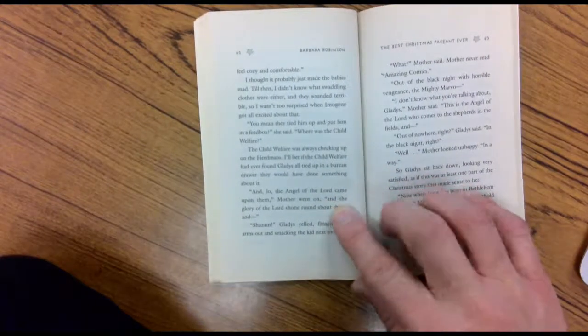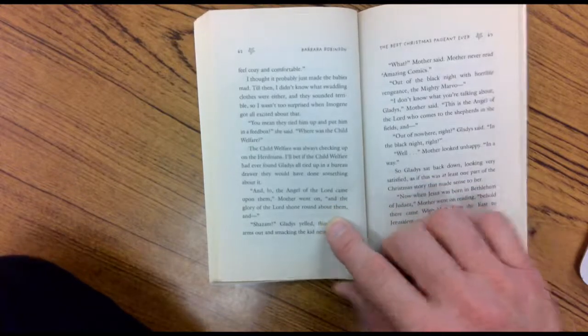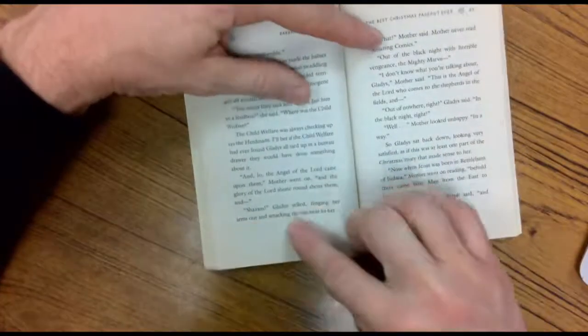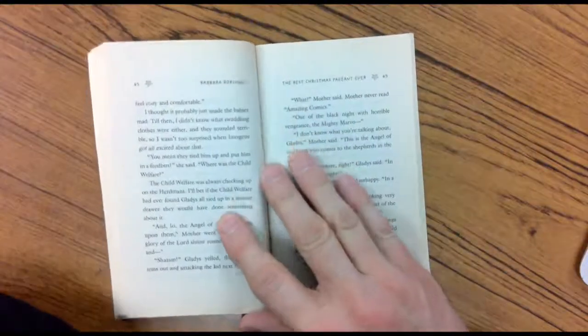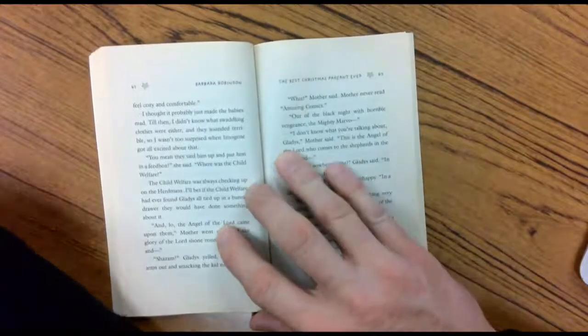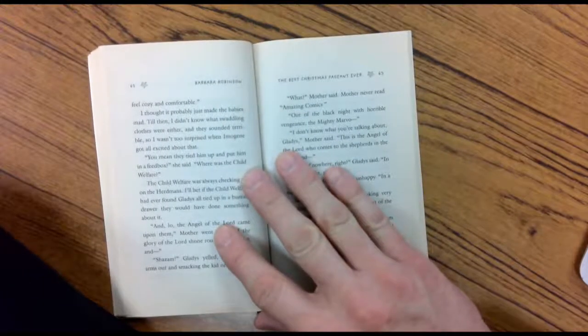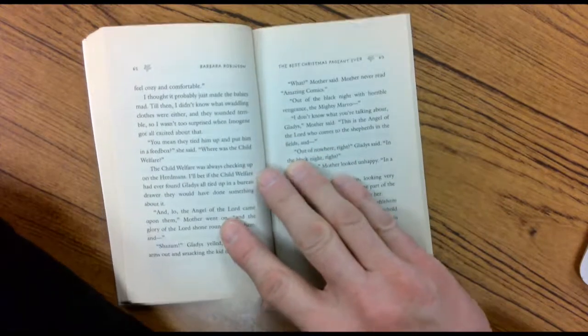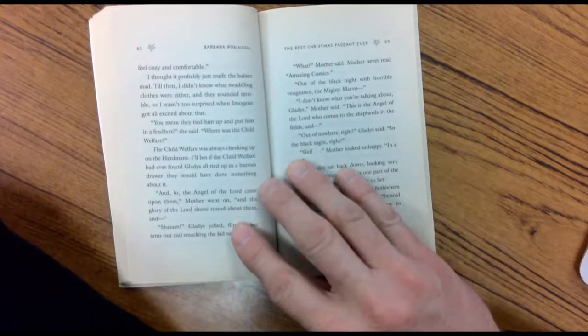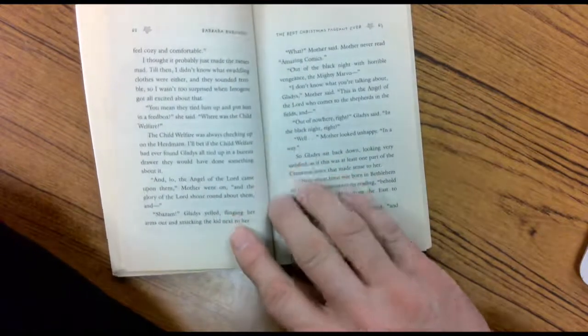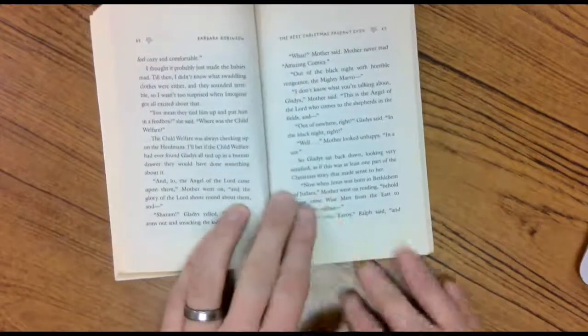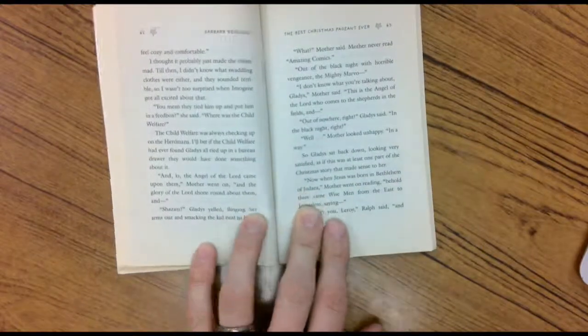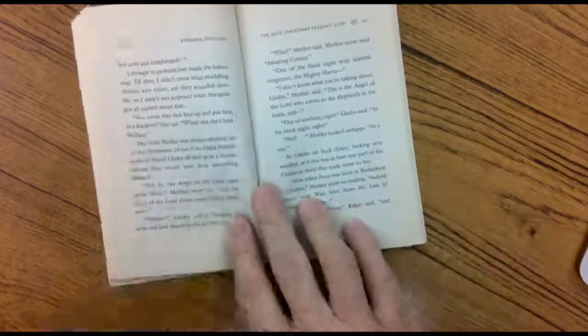The child welfare was always checking up on the Herdmans. I'll bet if the child welfare had found Gladys all tied up in a bureau of drawers, they would have done something about it. And lo, the angel of the Lord came upon them, Mother went on. And the glory of the Lord shone around them. Shazam! Gladys yelled, flinging her arms out and smacking the kid next to her accidentally. What? Mother said. Mother never read amazing comics. Out of the black night with horrible vengeance. The mighty Margo! I don't know what you're talking about, Gladys, Mother said. This is the angel of the Lord who comes to the shepherds in the fields and out of nowhere, right? Gladys says. In the black night, right? Well, Mother looked unhappy. In a way. So Gladys sat back down looking very satisfied as if it was at least one part of the Christmas story that might make sense. I kind of like that part. Shazam!